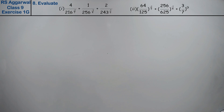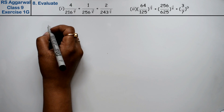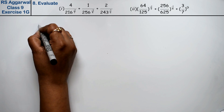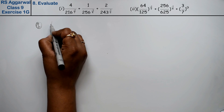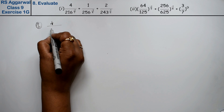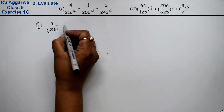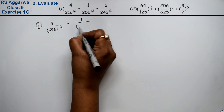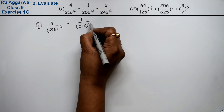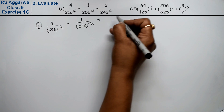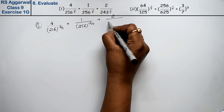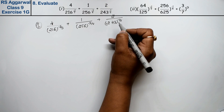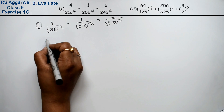Let's do question number 8 of exercise 1G, that is Number Systems. Question number 8 is to evaluate. The first part is: 4 upon 216 to the power minus 2 upon 3, plus 1 upon 256 to the power minus 3 upon 4, plus 2 upon 243 to the power minus 1 upon 5. Since the powers are negative, we take the reciprocal.